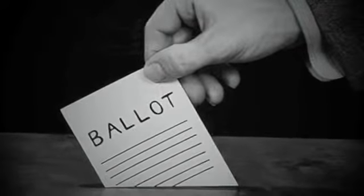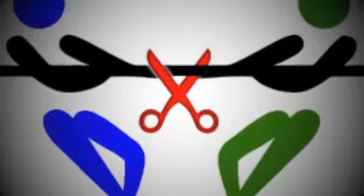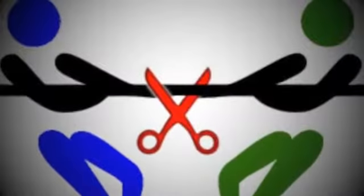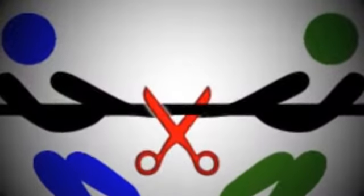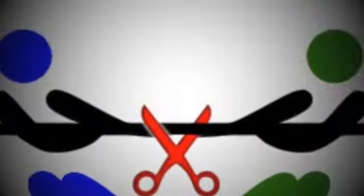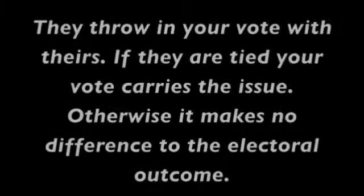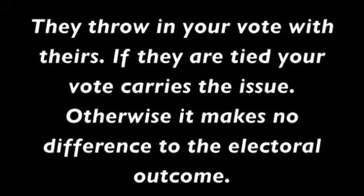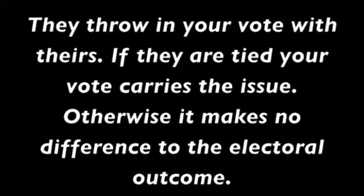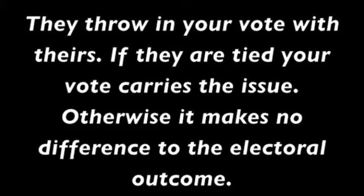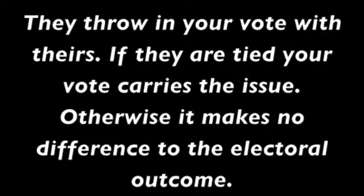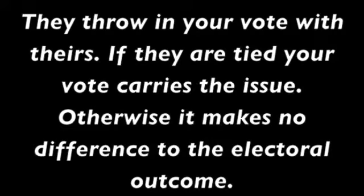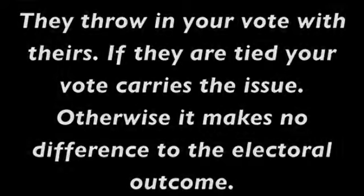In stage eight, you are granted the right to vote, but only to break a tie. You write down your vote, and if a tie should occur, your vote is opened up and recorded. No tie has ever occurred. Finally, in stage nine, you are fully granted the right to vote. But this simply means, functionally, that as in stage eight, in case of a tie, your vote carries the issue. But there has never been a tie.